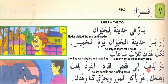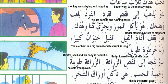'Badrun yazhabu ila al-qafas al-qird' means Badr went to the monkey cage. 'Qafas' means cage. 'Al-qird yalaabu wa yazhak' — the monkey is playing and laughing. 'Hua yakul al-mooza' — he is eating banana — 'wa yajri' — and running — 'hona wa honak': 'hona' means here, 'honak' means there.